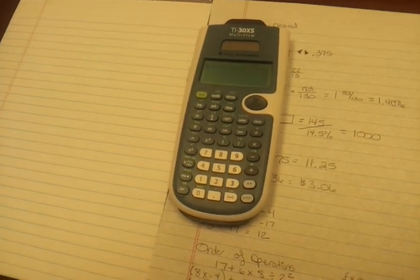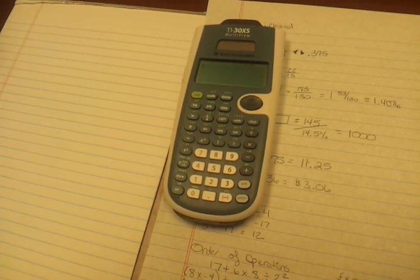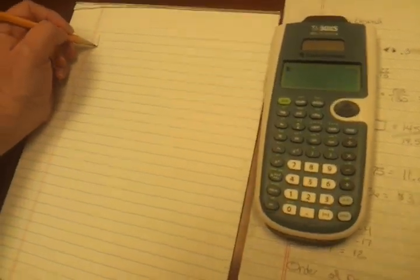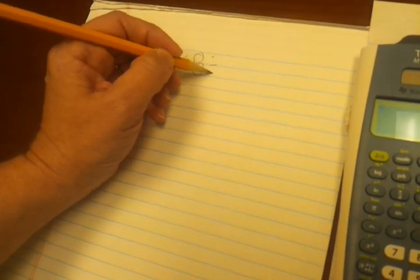However, when we're using the calculator, the benefit is the calculator remembers all of it. So let's start with a problem: 17 plus 6 times 8 divided by 2 squared.